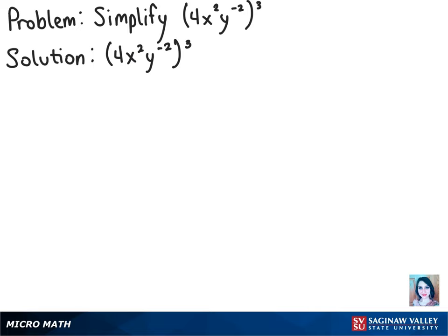To start with this problem, we're going to use the property of exponents to multiply that 3 by all the exponents inside of the parentheses.